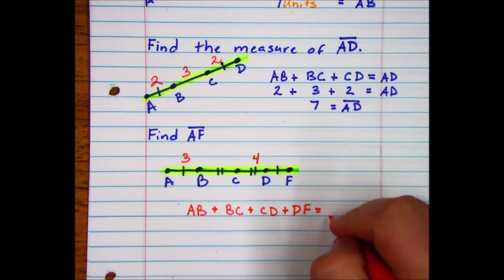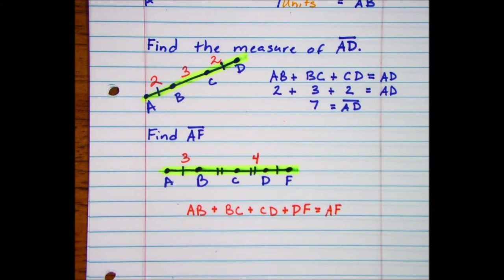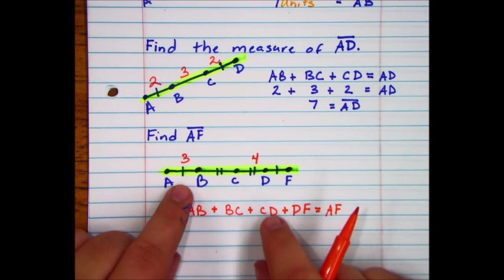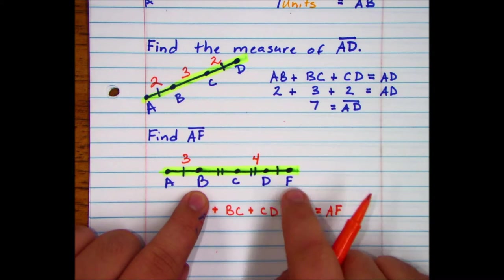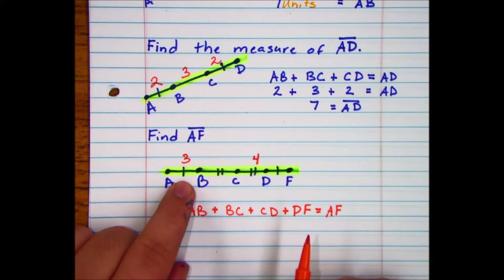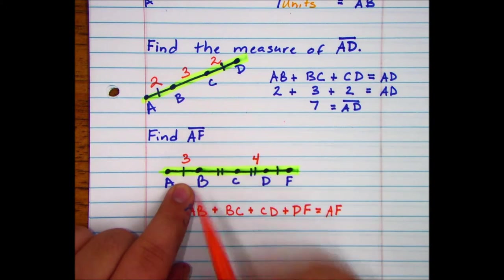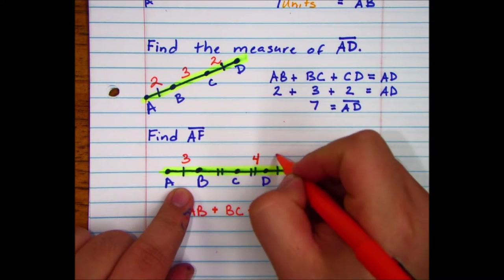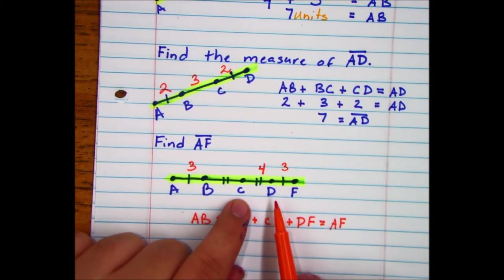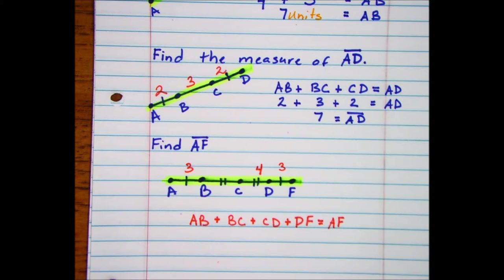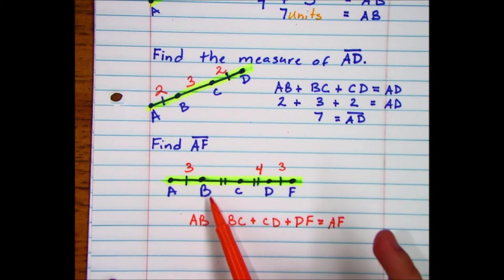So once again we have our little hash marks that identify that AB is congruent to DF. So since our little hash mark tells us that they're congruent, AB is congruent to DF. AB is 3, so is DF. We're also told that CD is congruent to BC. CD is 4, so BC is 4.